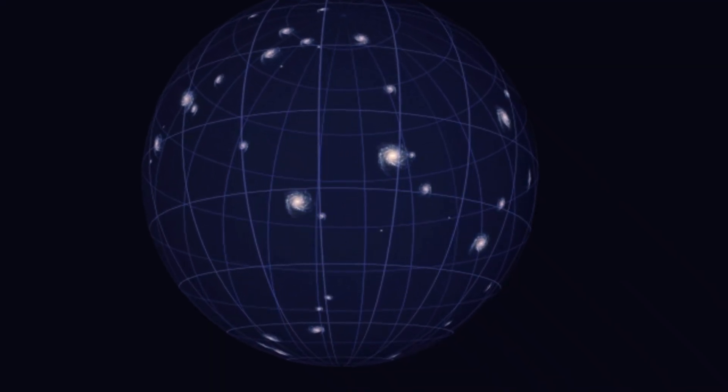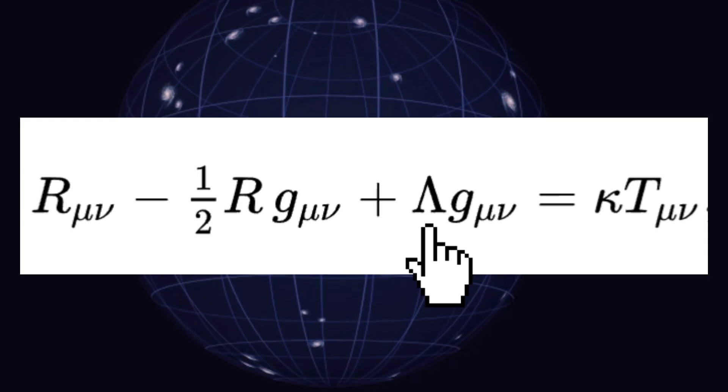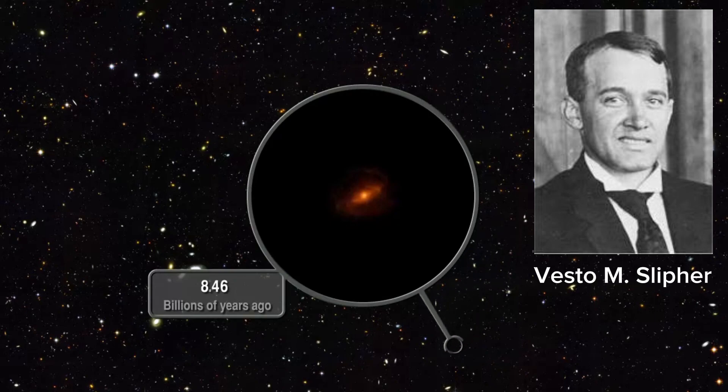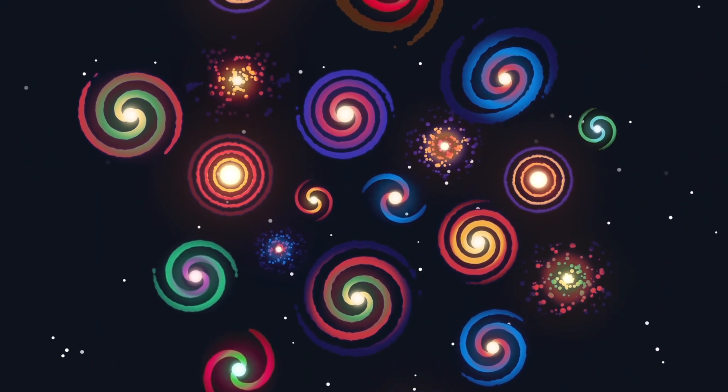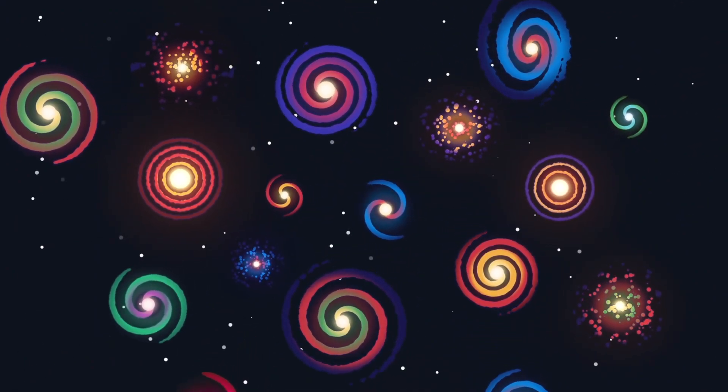But Einstein abandoned the constant, calling it the biggest blunder of his life. In 1912, an American astronomer named Vesto Slipher discovered that distant galaxies are redshifted. In addition to this, he observed something interesting there. He found that almost all the redshifted galaxies were receding from Earth.